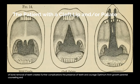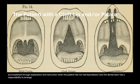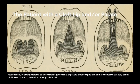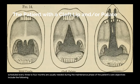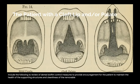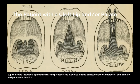Parental counseling and anticipatory guidance: understanding the value of preventive procedures is accomplished through explanation and instruction. When the patient has not had specialized care, the dental team has a responsibility to arrange referral to an available agency, clinic, or private practice specialist. Primary concerns are daily dental biofilm removal and prevention of early childhood caries. Frequent appointments scheduled every three to four months are usually needed during the maintenance phase. Objectives include reviewing dental biofilm control measures, providing encouragement for maintaining supporting structure health and cleanliness of the removable prosthesis, removing all calculus and biofilm, and supervising a dental caries prevention program for both primary and permanent dentitions with fluoride and sealants.